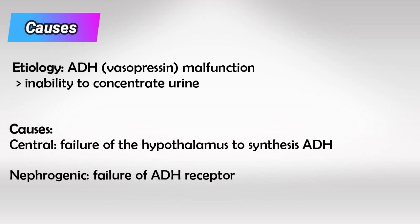ADH is secreted from the hypothalamus, so if the secretion is decreased, we call this central diabetic insipidus. And it works on the kidneys, so if the receptors are defective in the kidneys, we call this nephrogenic diabetic insipidus.